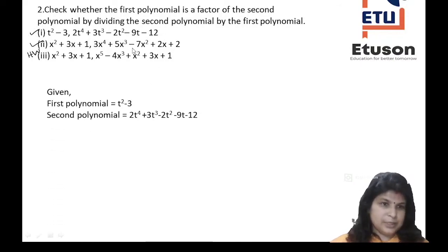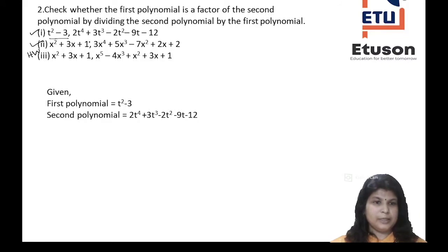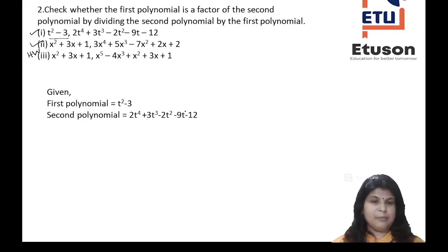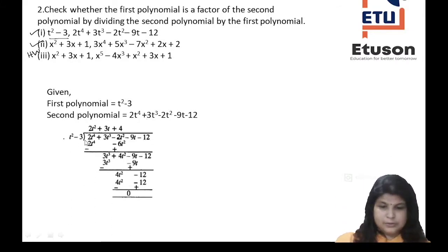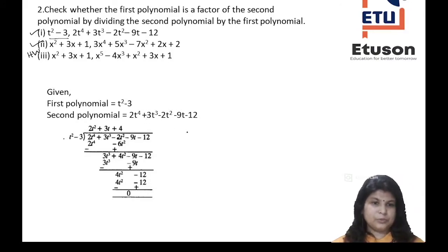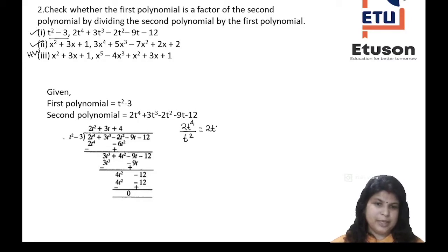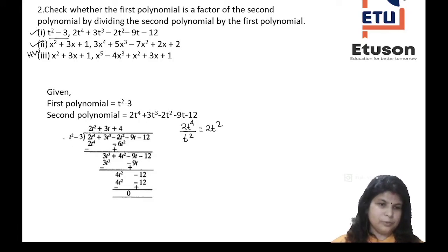In the first part, the first polynomial is t² - 3 and the second polynomial is 2t⁴ + 3t³ - 2t² - 9t + 12. You divide the second by the first. Initially, 2t⁴ divided by t² gives 2t². Multiply 2t² with t² - 3 to get 2t⁴ - 6t². After subtracting, the new dividend is 3t³ + 4t² - 9t - 12.